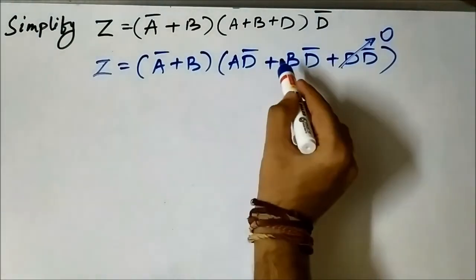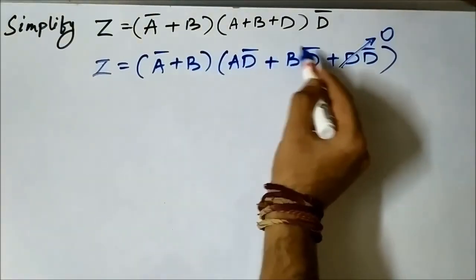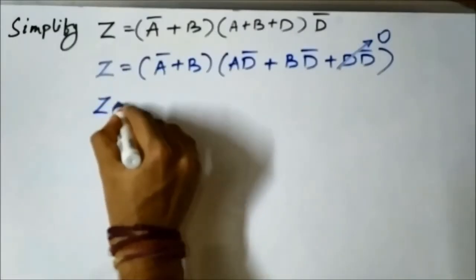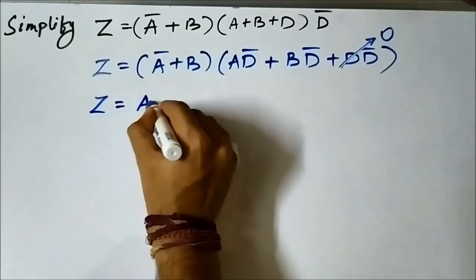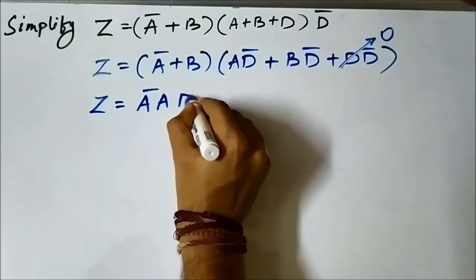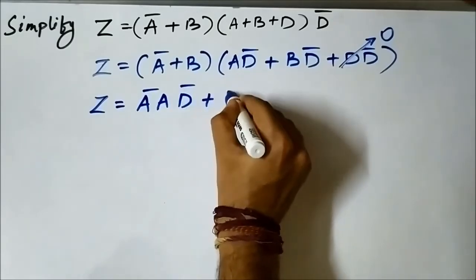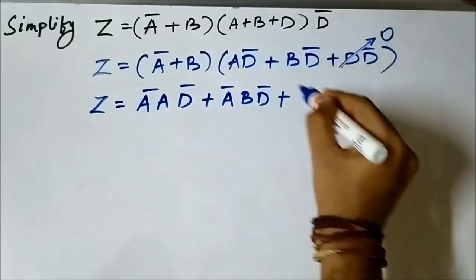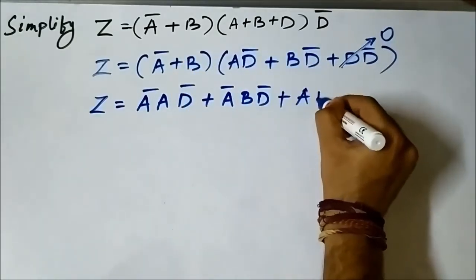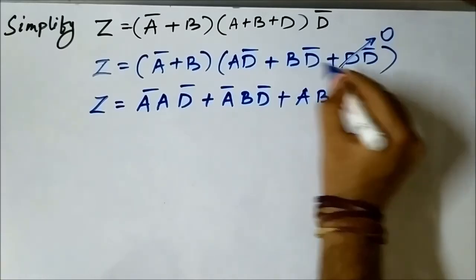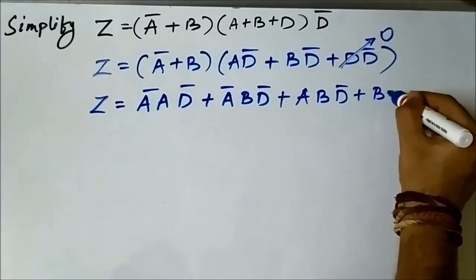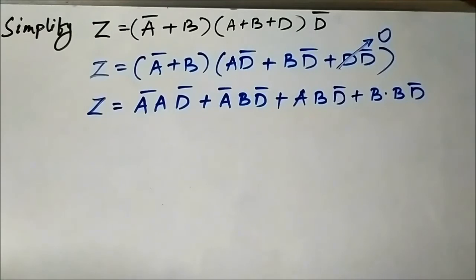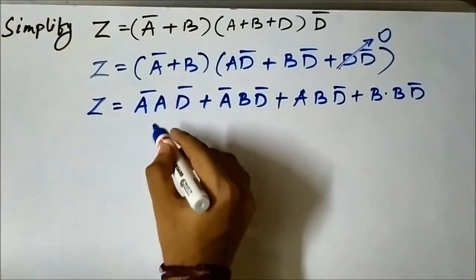Opening the remaining bracket, multiplying each term: z = ā·a·d̄ + ā·b·d̄ + a·b·d̄ + b·b·d̄. Here ā·a = 0, so the first term drops out.